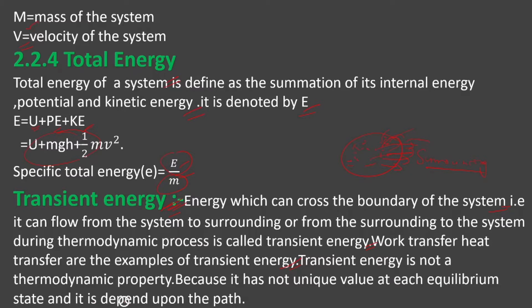Transient energy is dependent upon the path, so it is not a thermodynamic property. To be a thermodynamic property, it must satisfy: first, each equilibrium state must have a particular unique value, and second, it must be path independent. Since transient energy does not satisfy these conditions, it is not a thermodynamic property. Thank you so much for watching this video.